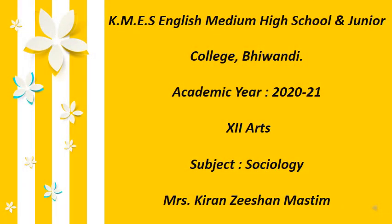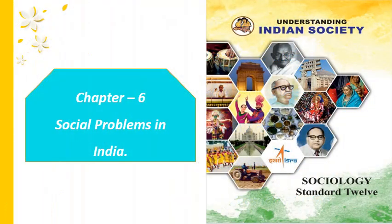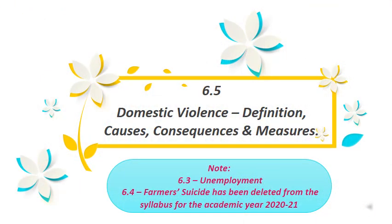Hello students, welcome to the 20th online lecture for the subject of Sociology. We will continue with the 6th chapter of our textbook, that is Social Problems in India. Please note that 6.3 unemployment and 6.4 farmer suicide has been deleted from the syllabus for the academic year 2021. The topic that we will study in today's lecture is domestic violence — its definition, meaning, causes, consequences and measures.